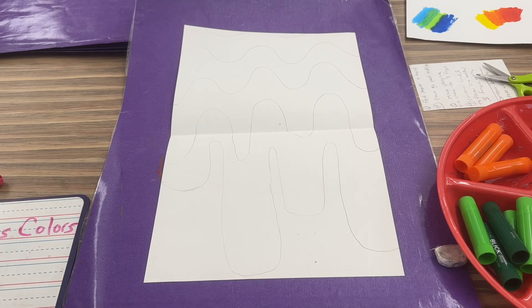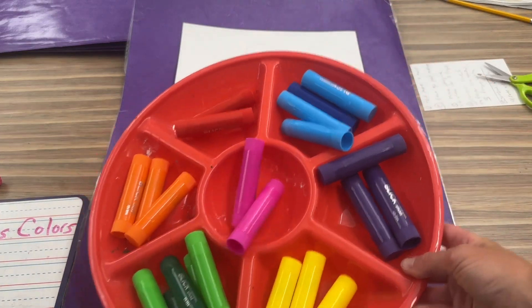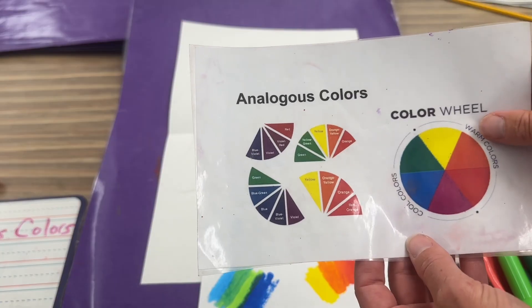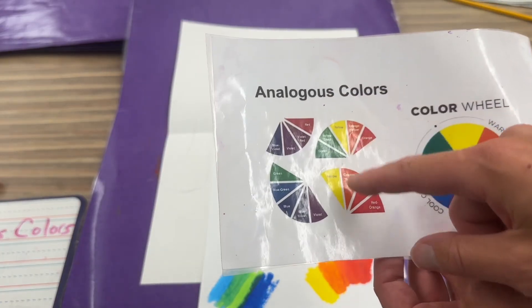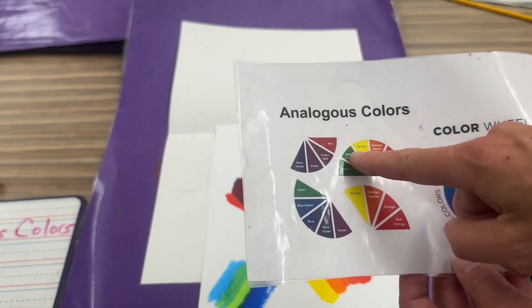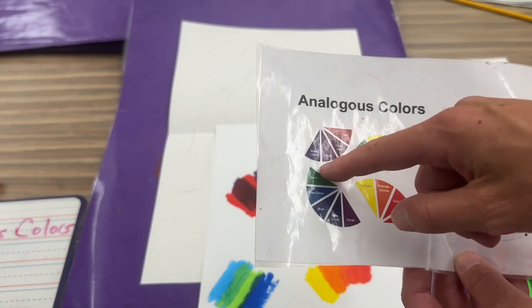Once you're all done with that, then you'll be ready for some color. I tested some of these colors out. We're gonna be using tempera sticks, which many of you have used before, and you are going to pick analogous colors that you want to use for your design. You can use up to four, but you don't have to use all four - you could just use three, and you can repeat it.